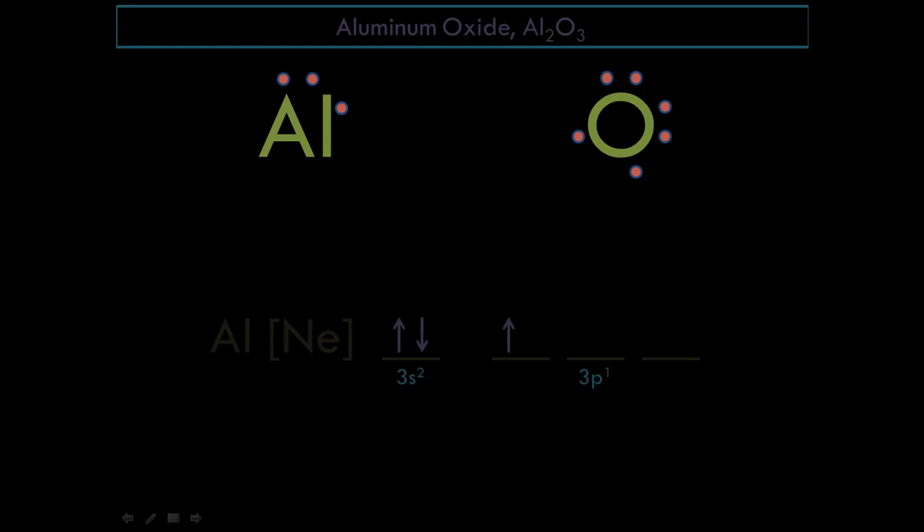This is the orbital notation for aluminum. The orbital notation for aluminum is neon, that of neon, plus this present in the outer energy level, energy level 3.